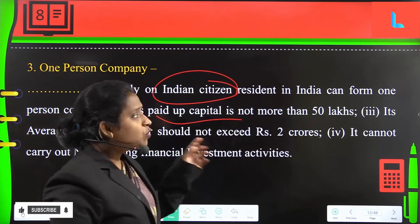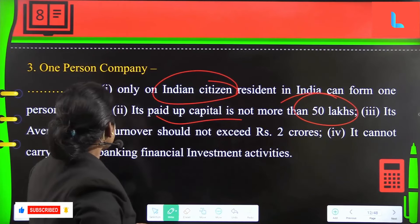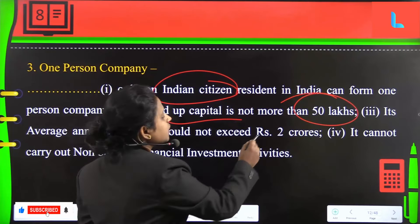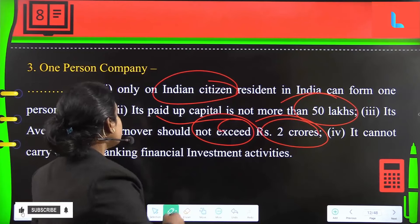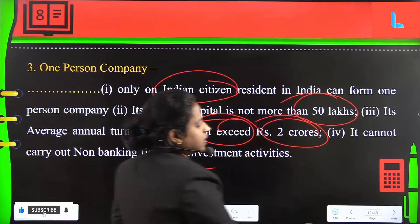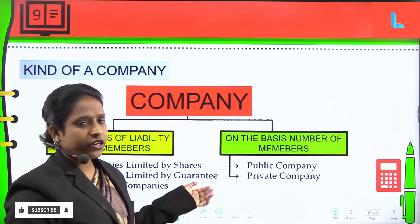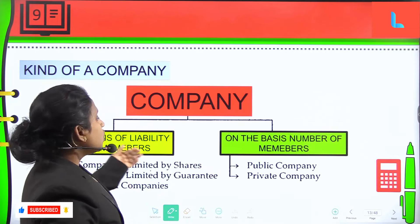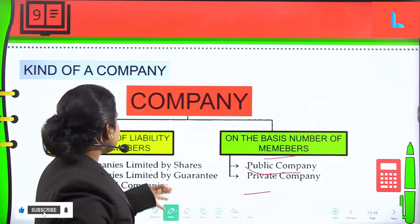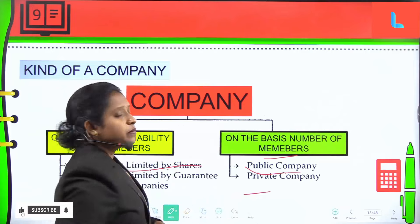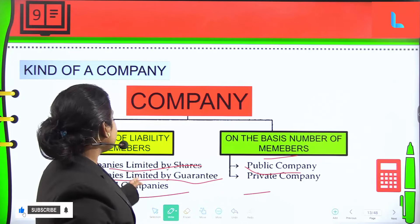For a one person company, its paid-up capital is not more than 50 lakhs, and its average annual turnover should not exceed 2 crores. It cannot carry out non-banking financial investment activities. Next, kinds of companies. On the basis of the number of members, there are two types: public company and private company. On the basis of liability of members, there are: companies limited by shares, companies limited by guarantee, and unlimited companies.